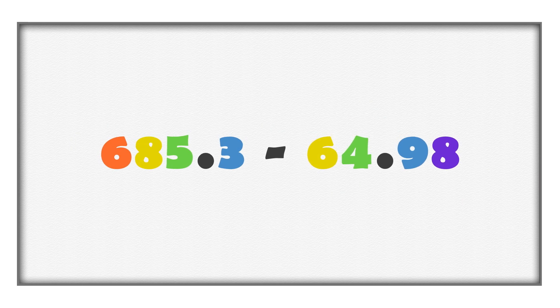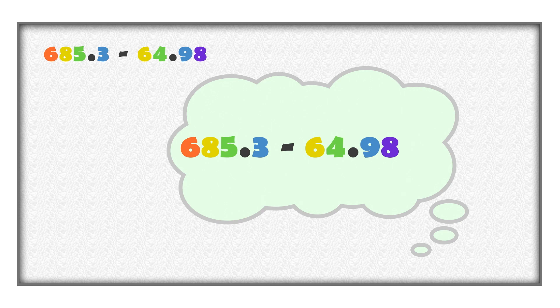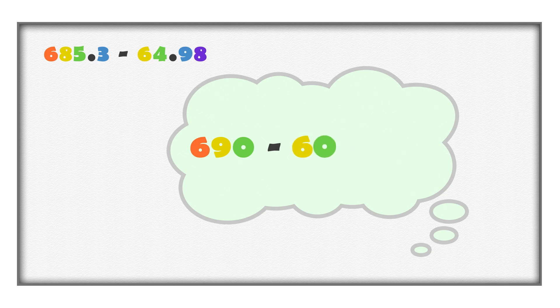Here is another example: 685 and 3 tenths minus 64 and 98 hundredths. Before subtracting these numbers, we can estimate the answer. 685 and 3 tenths is approximately 690, and 64 and 98 hundredths is approximately 60. 690 minus 60 is about 630.